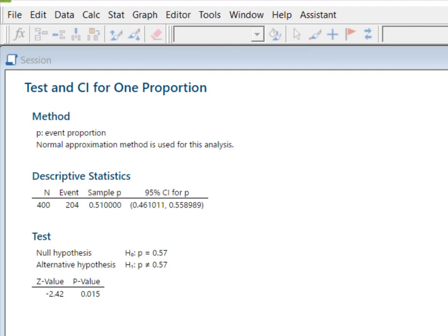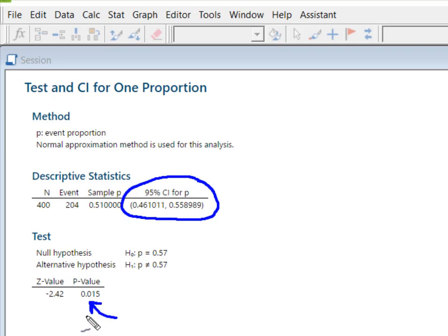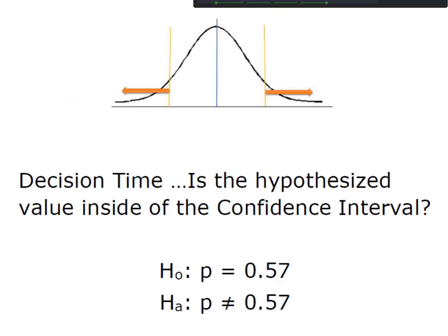Because we're using a confidence interval approach, the information we need out of Minitab is right here. They've constructed the 95% confidence interval for the proportion. Now if you peek down at your p-value, you probably already know what the answer is going to be, but we're going to interpret this test based on the confidence interval. Minitab calculated our lower limit to be 0.461 and the upper bound to be 0.559.